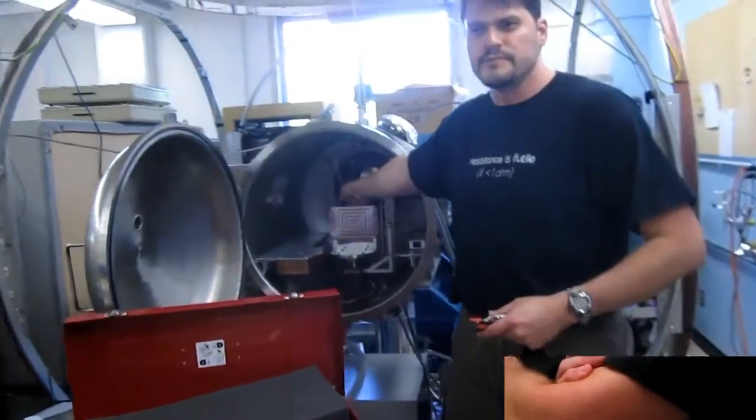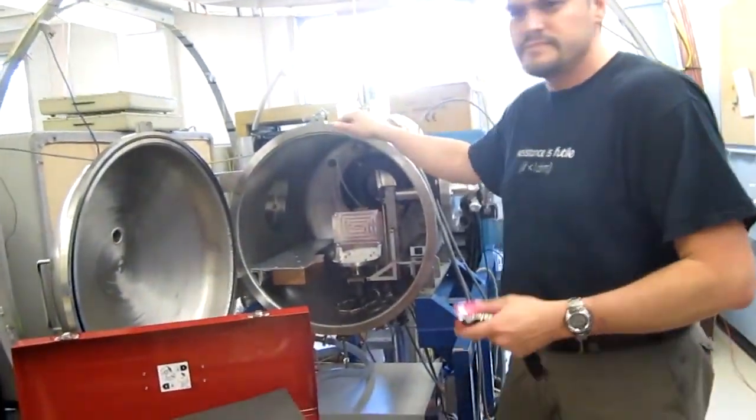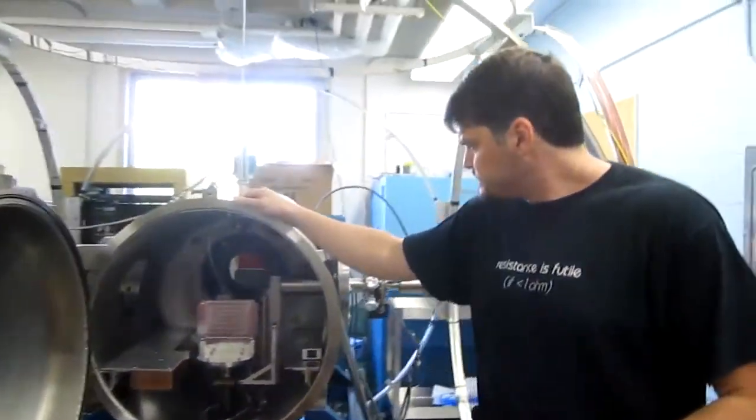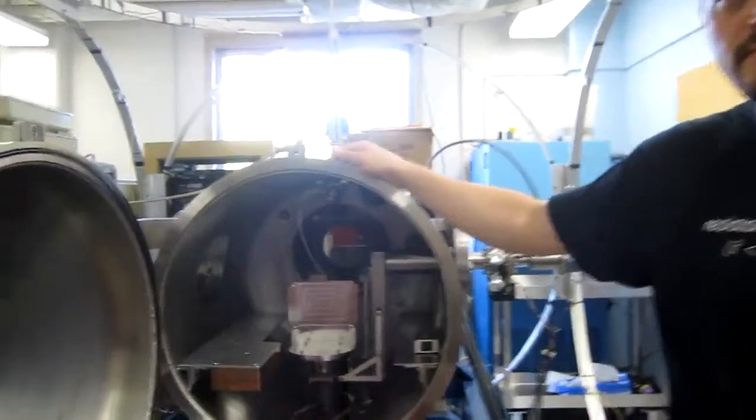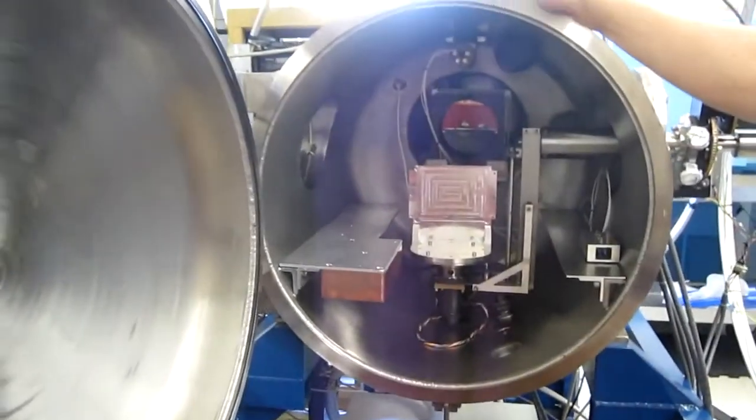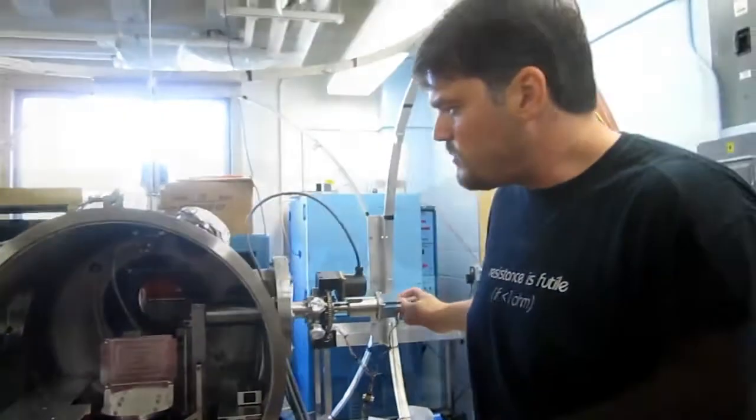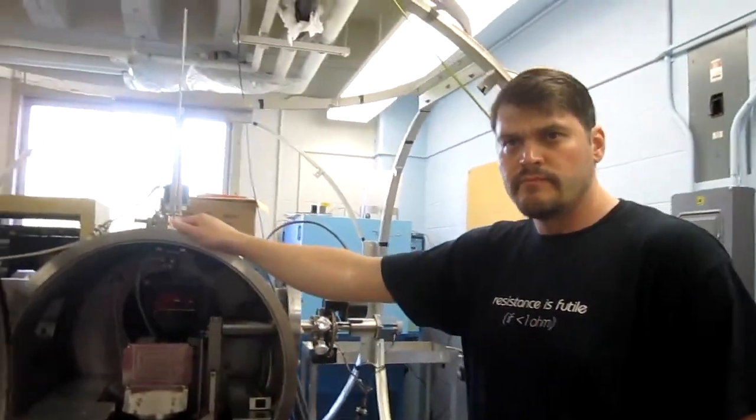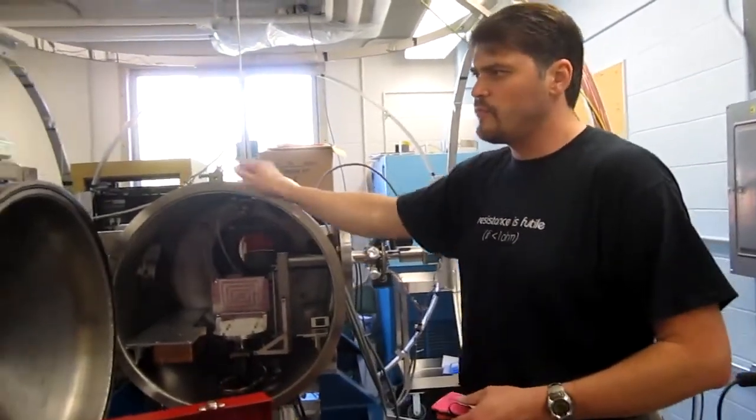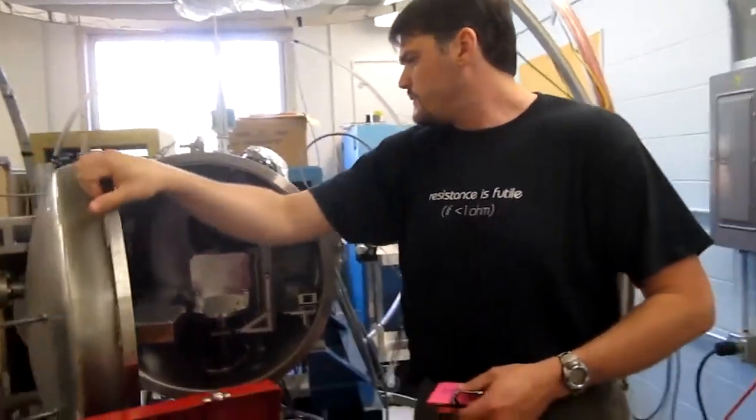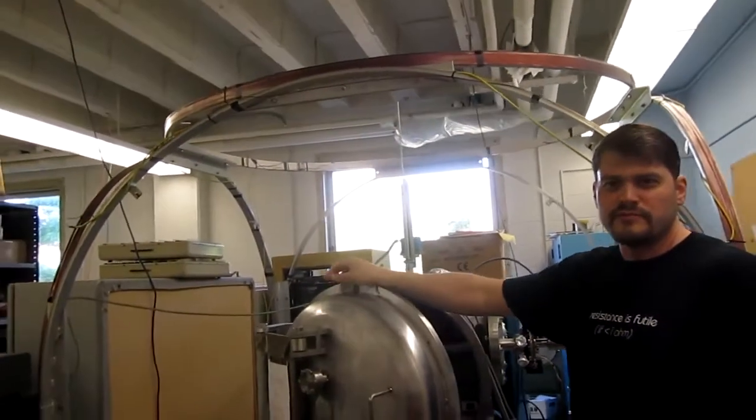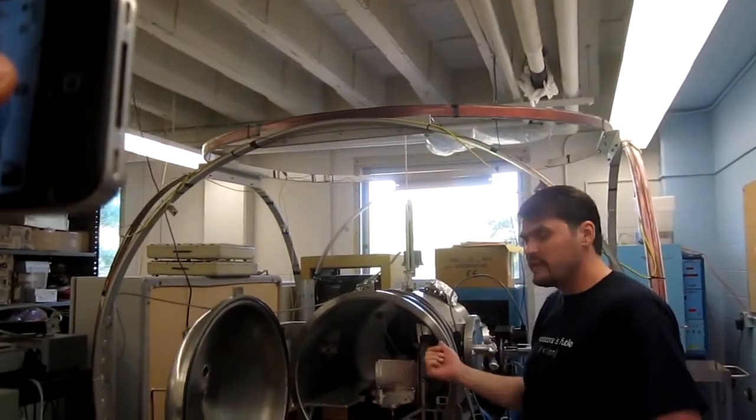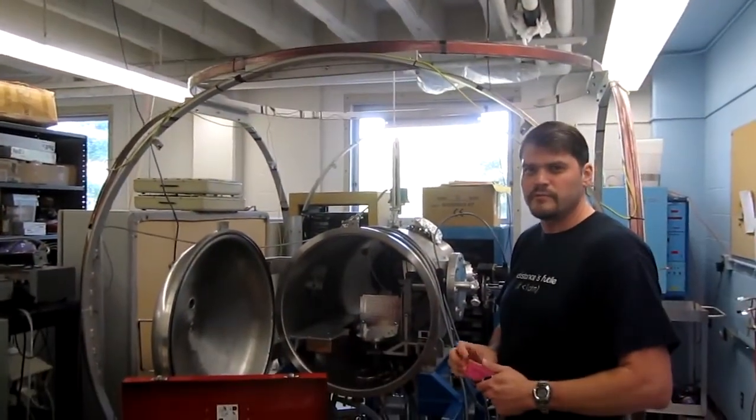The electron source will sweep through various energies of the electron to calibrate the detector. So you test all the detectors before you put them on the rockets. We test them in here before we deliver them because we can't test them in atmosphere because of the high voltage. So we throw them in here before we deliver them to the rocket.